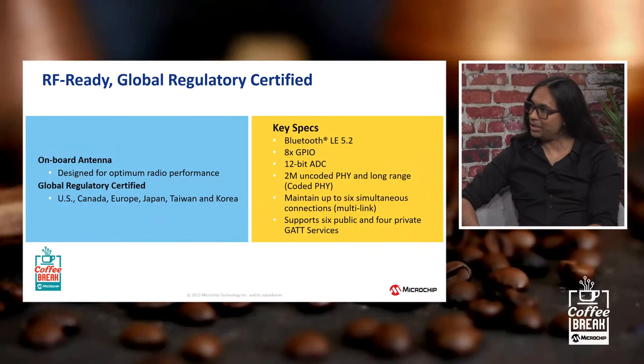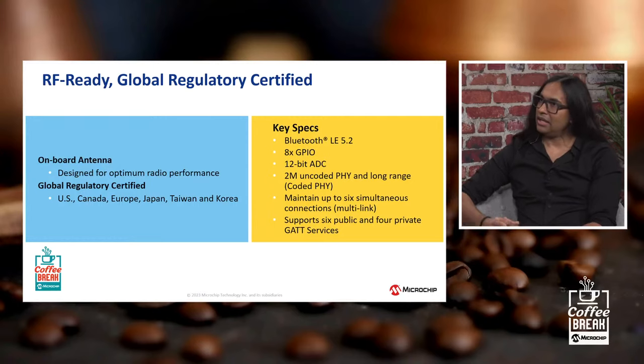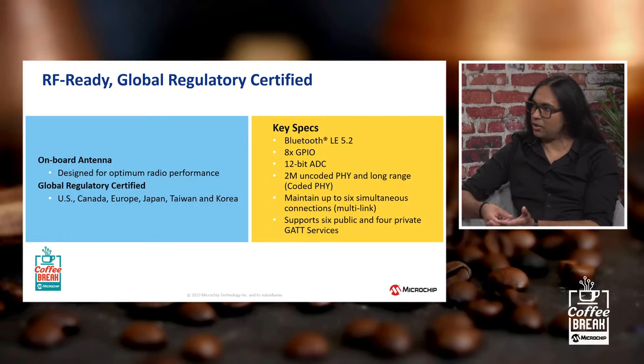At Microchip, we talk a lot about helping customers reduce their time to market and reduce their risk. So how does this module help with those design challenges? Microchip's wireless philosophy is to remove any and all the hurdles. With that in mind, we have removed the RF, the certification, and the programming needs with this module — the RNBD 451 — which is a small form factor module that is RF ready, certified, and requires no programming at all. It's a module with a PCB antenna, so if you have your circuit board ready, you just put it on, solder it, and as far as RF is concerned, there's no development needed on the hardware side.